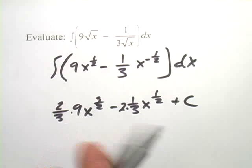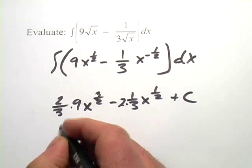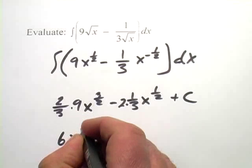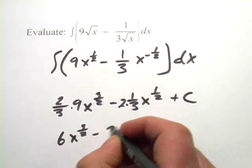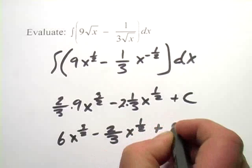Now we can simplify this a little bit, so 2 thirds times 9 would be 6 times x to the 3 halves minus 2 thirds x to the 1 half plus C.